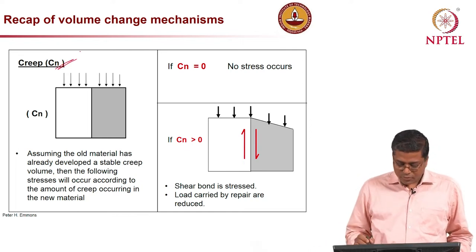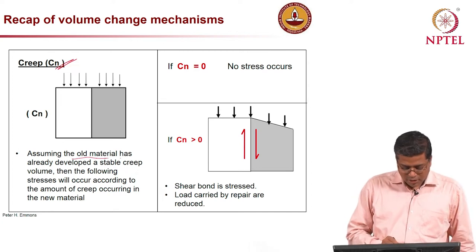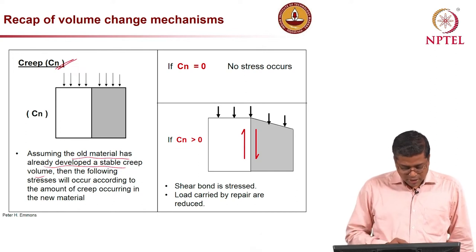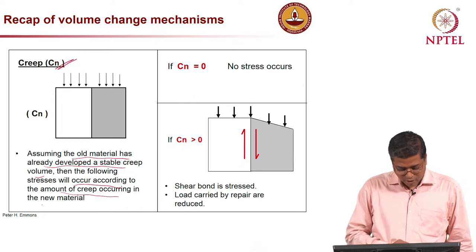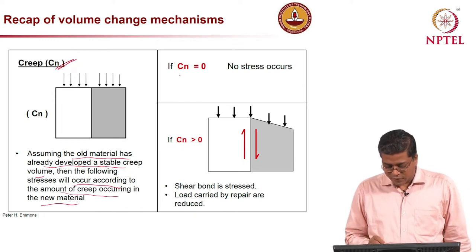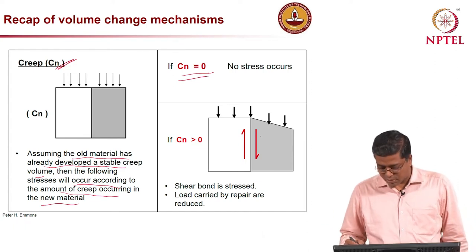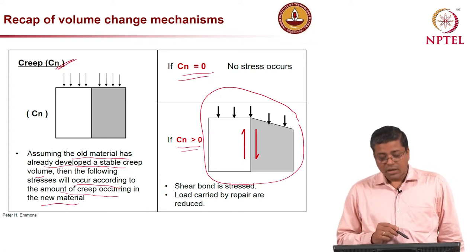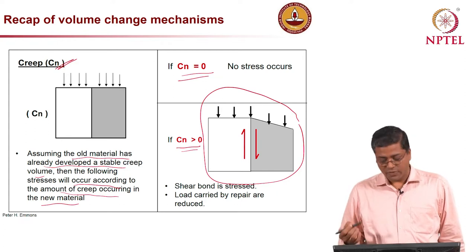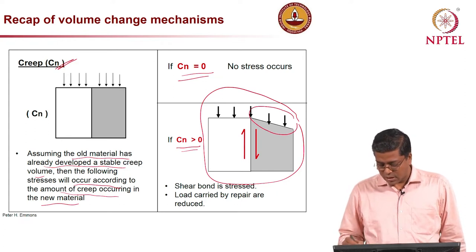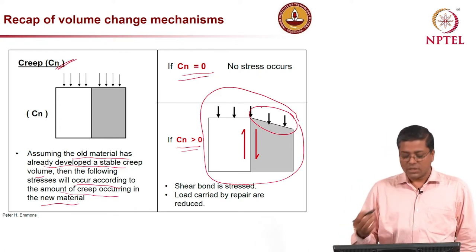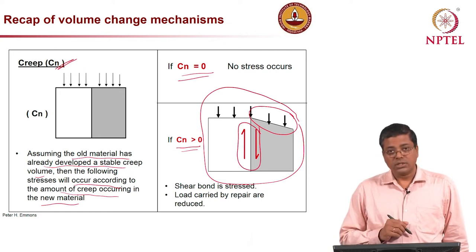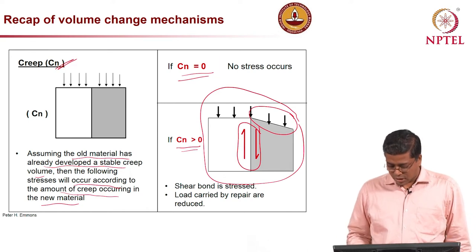We also talked about creep. Assuming the old material has already developed a stable creep volume — meaning no further creep — the following stress will occur according to the amount of creep in the new material. If there is no creep, no stress is generated. But if C_N is greater than zero or a significant number, you may see significant deformation, and once there is movement you can experience shear stress along the interface, which is not good.